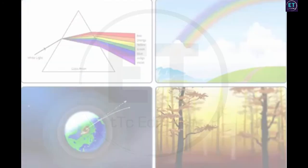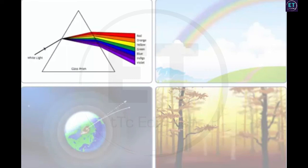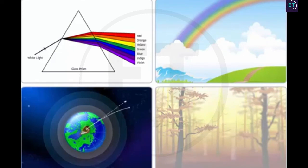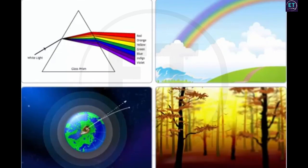This brings us to the end of this lesson on dispersion and the scattering of light. In this lesson, you have learned about refraction and dispersion of light through a triangular glass prism, formation of a rainbow, atmospheric refraction, and the scattering of light. To revisit the key points covered in this lesson, please review the flashcard at the end of the lesson.